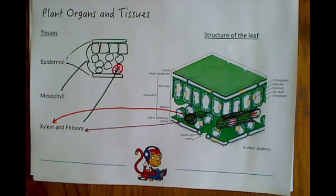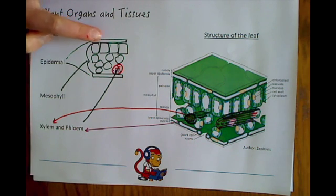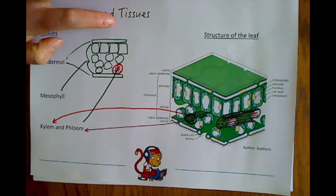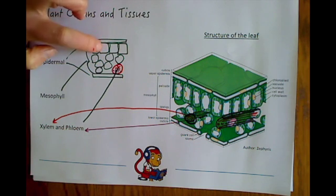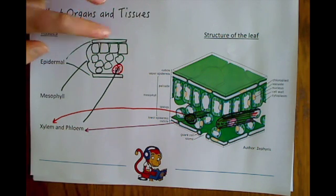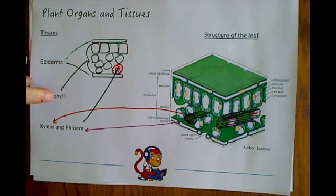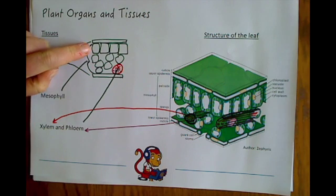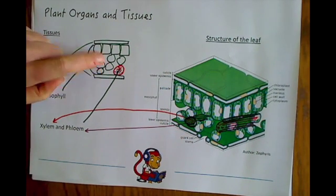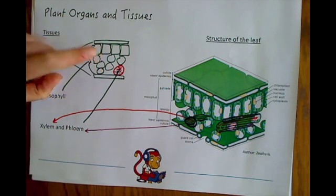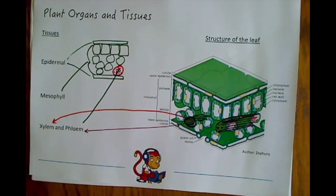In summary, plants have organs too. The one you need to know about is the leaf, with three main tissues: the epidermal layer, which is thin and protects the plant while still letting light through to prevent water loss; the mesophyll layer, important for photosynthesis with palisade cells full of chloroplasts and spongy mesophyll allowing gases to diffuse through; and the xylem and phloem for transport. If you found this video useful, please press the like button and feel free to subscribe. Thanks for watching.